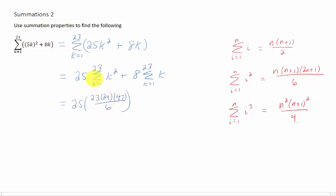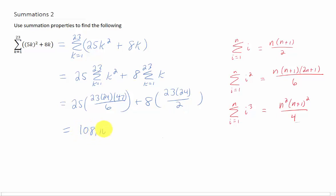This gives the value of our first sum. Our second sum from k equals 1 to 23 is the sum of k — that formula gives us 23 times 24 over 2, with n equals 23. Our first sum comes out to 108,100, and our second sum turns out to be 2,208. Add them together and you get 110,308.